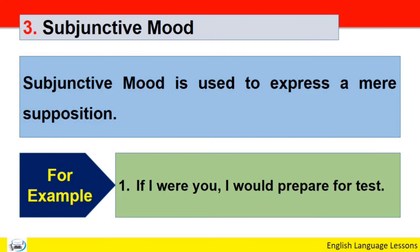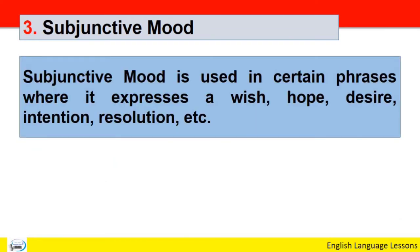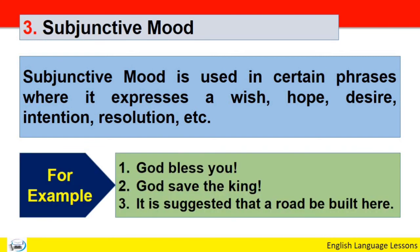Subjunctive mood is used in certain phrases where it expresses a wish, hope, desire, intention, resolution, etc. Yeh kuch certain phrases hai, koi khas phrases hai, in mein bhi subjunctive mood ka istemal hota hai - khwahish ke liye, umeed ke liye, desire, iraada, resolution, in cheezon ke liye subjunctive mood ka kuch khas phrases mein istemal hota hai. For example: God bless you! God save the king! It is suggested that a road be built here. In teeno sentences mein subjunctive mood ka usage wish, hope, desire, intention, ya resolution ki tor pe kiya gaya hai.